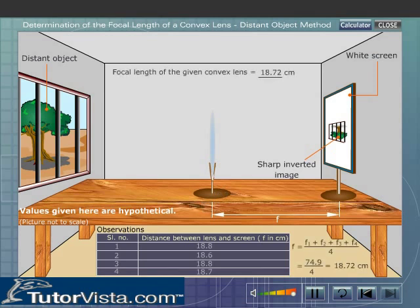Find the average value of F1, F2, F3 and F4. The average value gives the focal length of the lens.